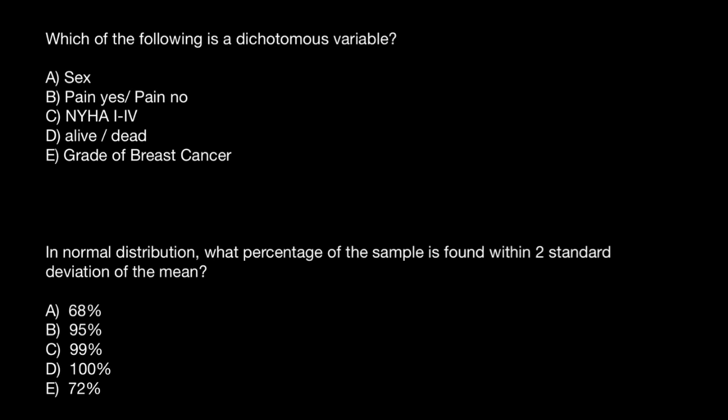Dichotomous data is considered categorical data that only has two categories or two answer choices. For example, sex has two variants: it can be male or it can be female. So this is a dichotomous variable. Pain yes or no also would be a dichotomous variable.